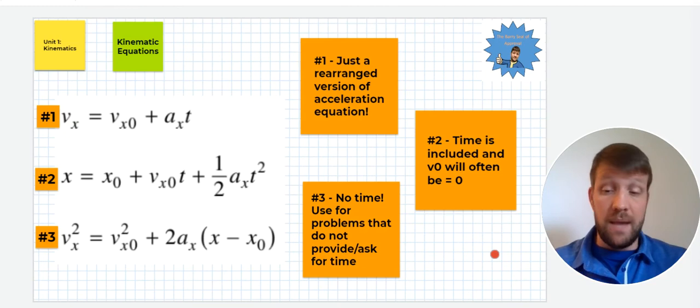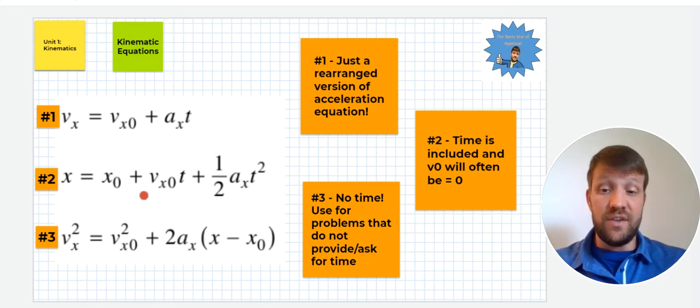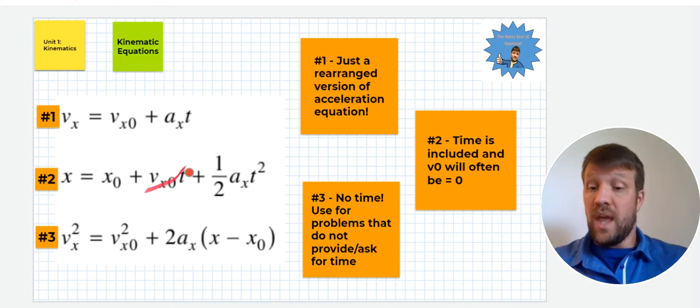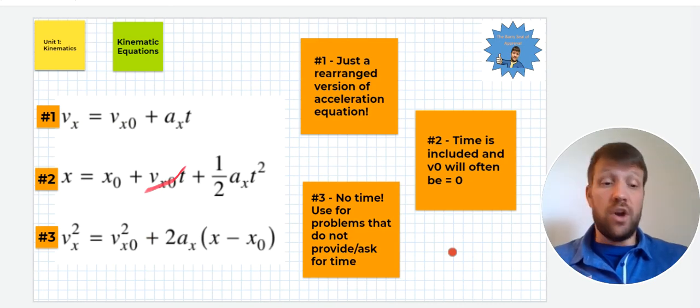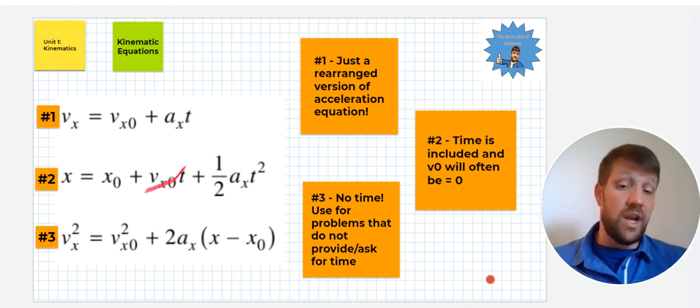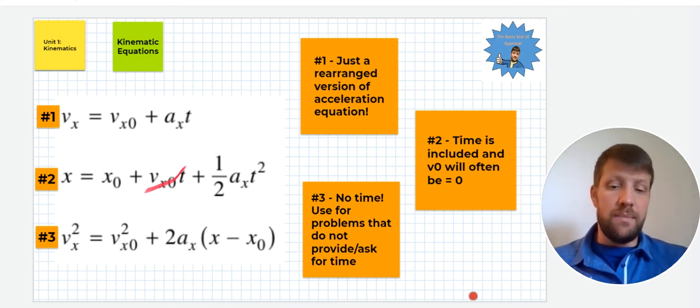In a lot of cases we're going to be able to set our problem solving so that the initial velocity is zero, which will get rid of this middle term and make this a very easy equation to use as well. Finally we have our equation number three. There is no time in this one, and that's really important because there's going to be some problems where you're not given time and you're not going to have to solve for time. You're just going to want to know how something moves regardless of the amount of time that it takes. This equation is very helpful in doing that. You'll use it for problems that do not provide or ask for time.